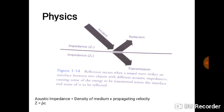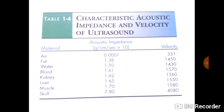At the boundary between two tissues with different acoustic impedance, you get reflection — in some cases complete reflection, in other cases absorption. The formula for acoustic impedance is the density of the medium multiplied by the velocity of the propagating sound. This applies to various media found in the human body, including air, fat, water, blood, kidney, liver, muscle, and skull. Knowing acoustic impedance helps determine which organs are seen better on ultrasound.